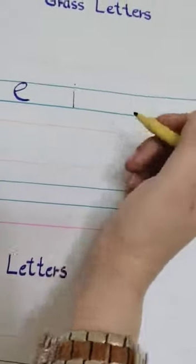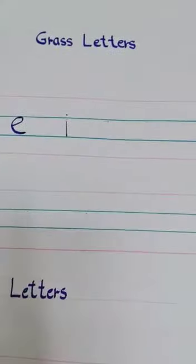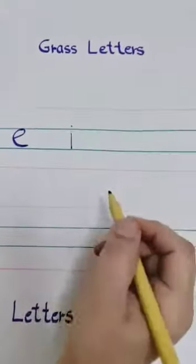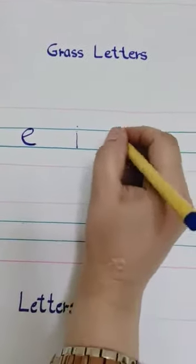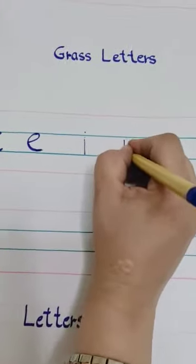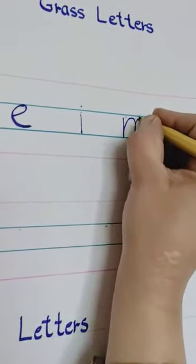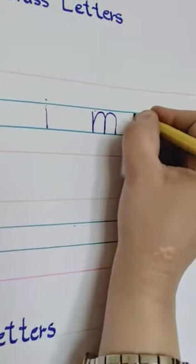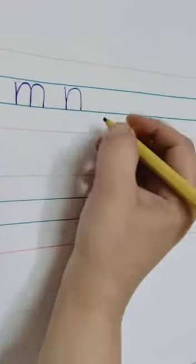What comes after I? J. J is not a grass letter because it comes in the last three lines. K is in the sky letter set. L is also in the sky letter set. So M — yes, M comes into the center two lines, it's called a grass letter. N is also a grass letter.